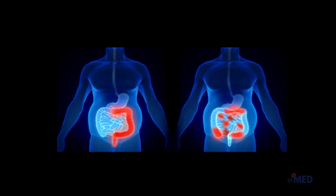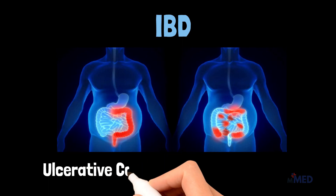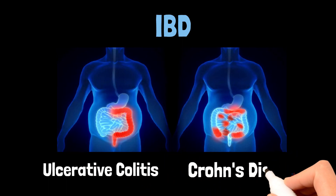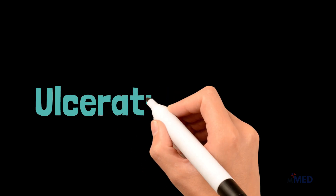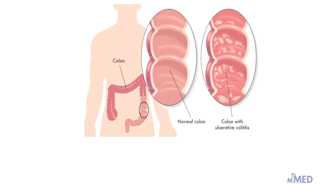Patients with IBD usually present with fever, fatigue, abdominal pain, and diarrhea — sometimes bloody. The two major players in IBD are ulcerative colitis and Crohn's disease. Ulcerative colitis is characterized by recurring episodes of inflammation limited to the mucosal layer of the colon.